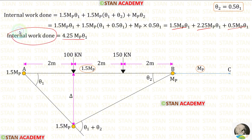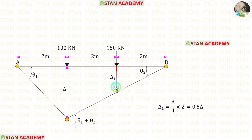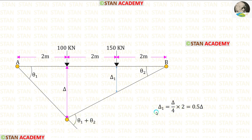Now we are going to find the external work done. For that, we have to find the height under the point load 150 kN — let us keep this height as delta 1. For the distance of 4 m, the height is delta. We want the height at the distance of 2 m, so we multiply by 2/4. Finally, for delta 1 we are getting 0.5 delta.